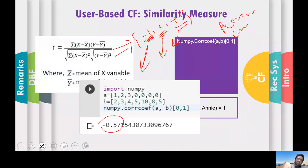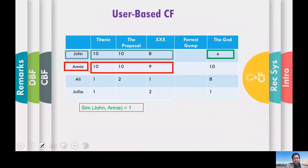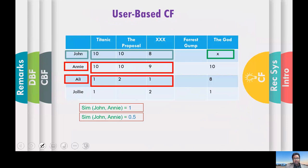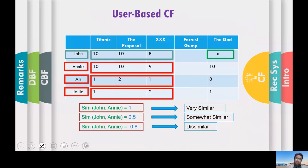Pearson correlation gives richer information because it identifies dissimilar, highly similar, and not-similar users. Based on this similarity measure, you find the similarity between the active user and all other users, then multiply the ratings of those neighbors by their respective similarity values.